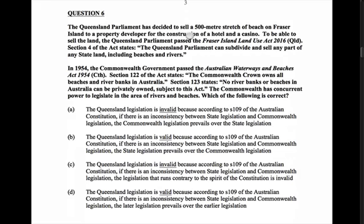Question six: the Queensland Parliament has decided to sell a 500-metre stretch of beach on Fraser Island to a property developer for the construction of a hotel and casino. To sell the land, the Queensland Parliament passed the Fraser Island Land Use Act, section 4 of which states the Queensland Parliament can subdivide and sell any part of any state land including beaches and rivers. In 1954 the Commonwealth passed the Australian Waterways and Beaches Act — section 122 states the Commonwealth Crown owns all beaches and riverbanks in Australia, and section 123 states no riverbanks or beaches in Australia can be privately owned. The Commonwealth has concurrent power to legislate in the areas of rivers and beaches. Which of the following is correct? So what we have is a classic clash of Queensland and Commonwealth legislation.